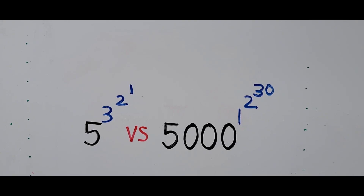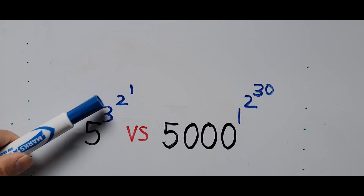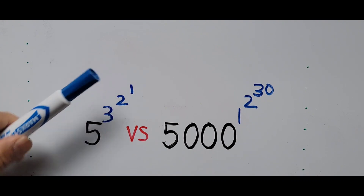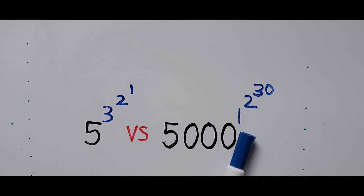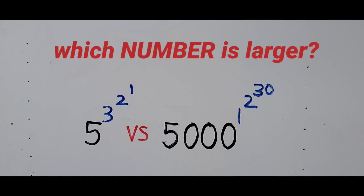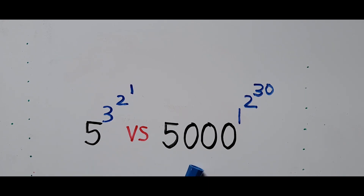Hello everyone, welcome to Casiano Easy Math. We have here nested numbers being compared. The left side is 5 to the power 3 to the power 2 to the power 1. The right side is 5,000 raised to the power 1 raised to the power 2 raised to the 30th power. The question is: which number is larger?